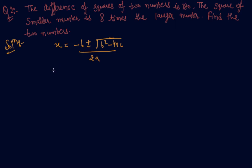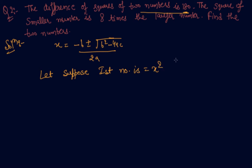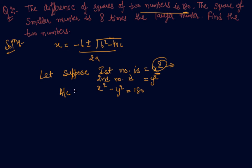In this question we are given that the difference of squares of two numbers is 180. Let's suppose the first number is x, so the first number squared is x square, and the second number is y, so y square. Then x square minus y square equals 180, according to condition one.